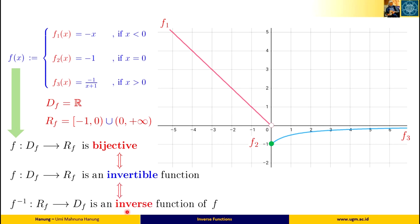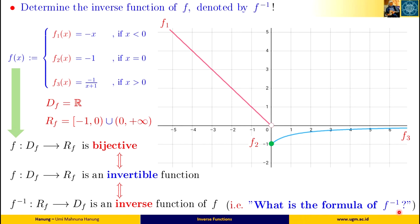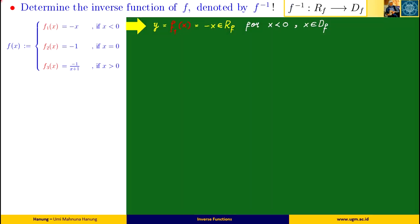So how do we find the inverse of this piecewise function f? Since function f has three different formulas f1, f2, and f3, we will find the formula of f inverse by finding f1 inverse, f2 inverse, and f3 inverse separately. Let's begin finding f1 inverse. We rename f1(x) as y, so we have y equals minus x in the range f, for all negative real numbers x in the domain f.